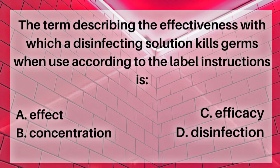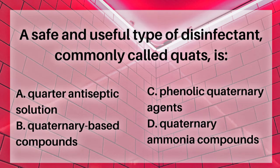The term describing the effectiveness with which a disinfectant solution kills germs when used according to the label instructions is: A. Effect, B. Concentration, C. Efficacy, or D. Disinfection. The answer is C. Efficacy. A great way to remember that is with the word effectiveness.